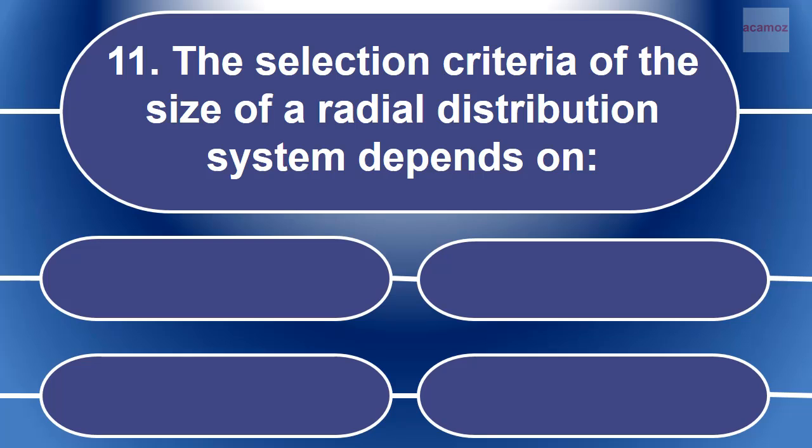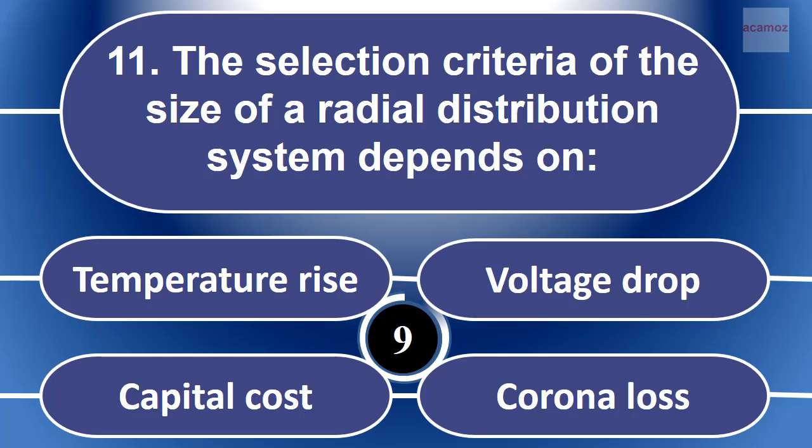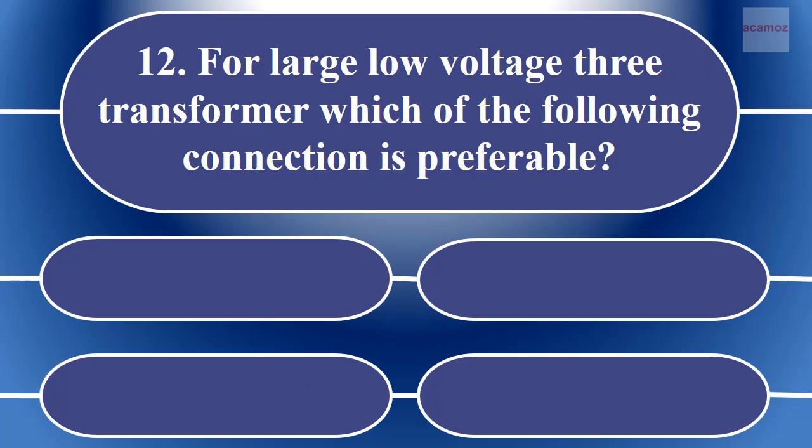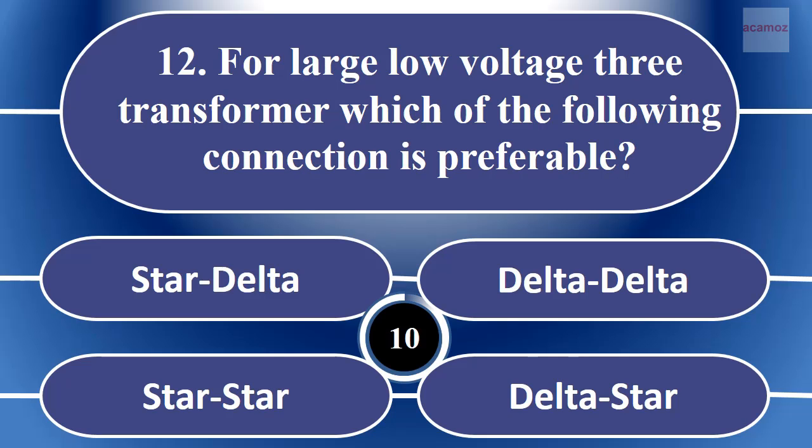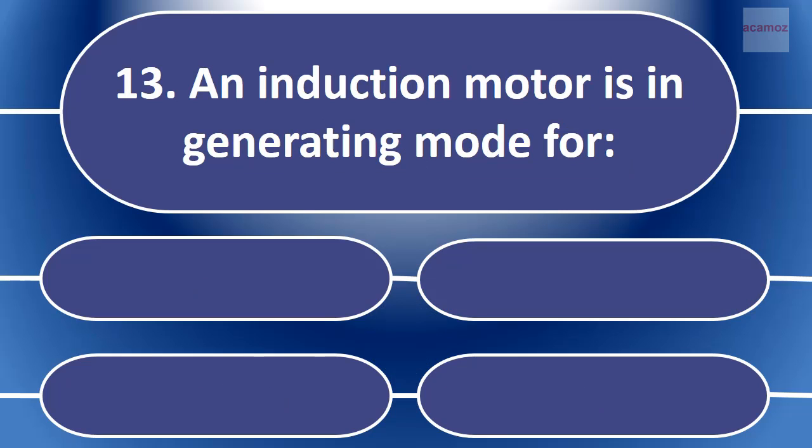For large low-voltage three-phase transformer, which of the following connection is preferable in generating mode?